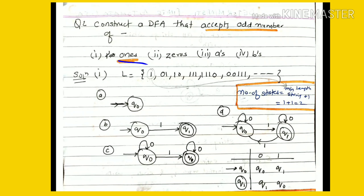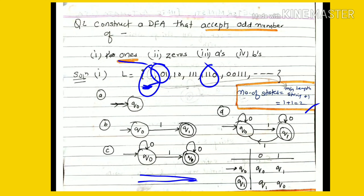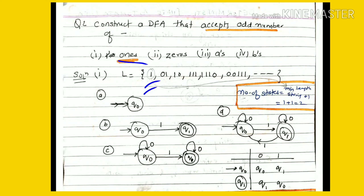Now, in the previous video you may have wondered why we took 2 states. The rule is: the number of states equals the minimum length string in the language plus 1. The smallest string with an odd number of 1s is a single '1', which has length 1. So 1 plus 1 equals 2 — we will have 2 states in this DFA. We will see examples with 3 and 4 states, but the formula is always minimum length string plus 1.